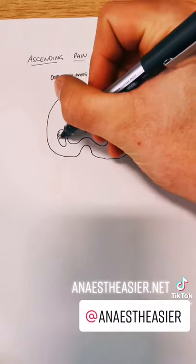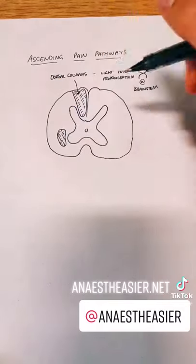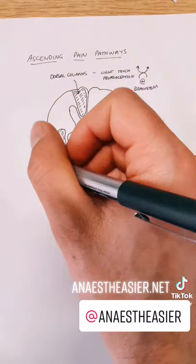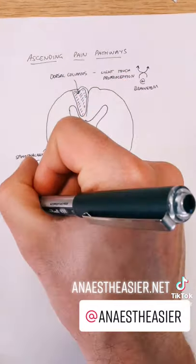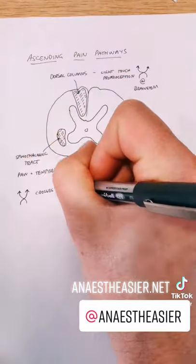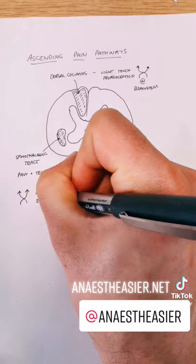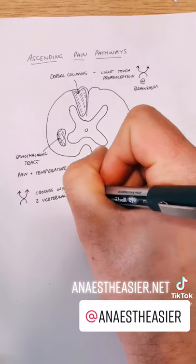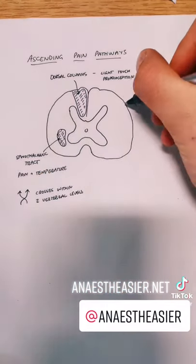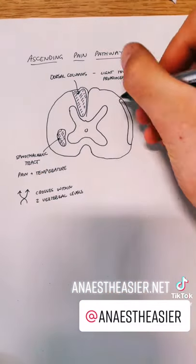The spinothalamic tract carries pain and temperature fibres, and crosses over pretty soon after entering the spinal cord, usually within two vertebral levels.